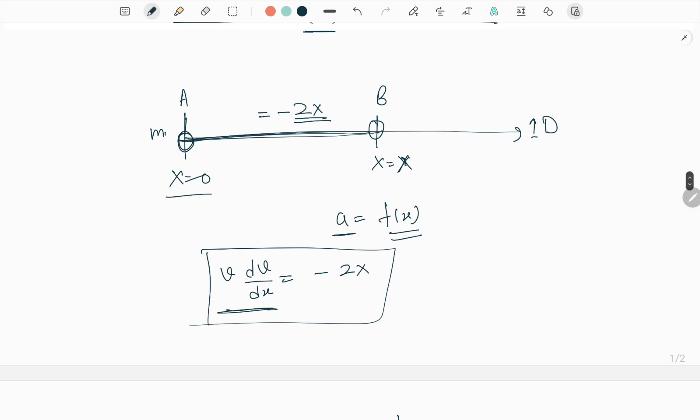If we simplify, v dv equals minus 2x dx. So the particle moves from x equals 0 to x equals x, and this is v initial and this is v final. So velocity moves from vi to vf, and x changes from 0 to x.